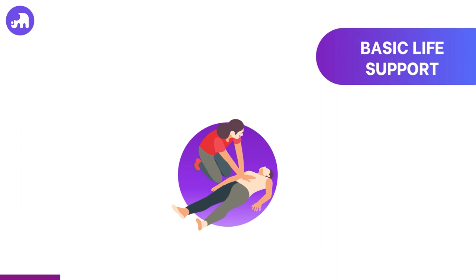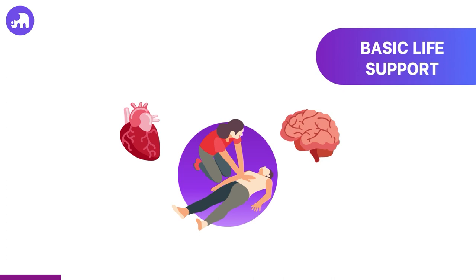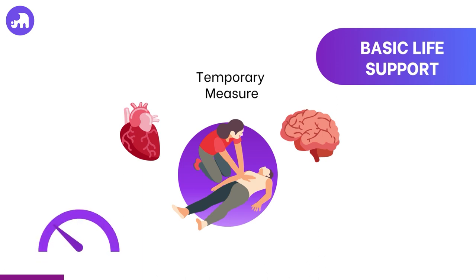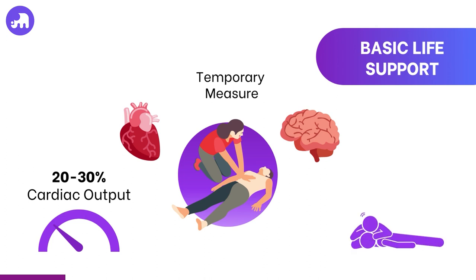The objective of BLS is to sustain myocardial and cerebral oxygenation until defibrillation or specialised personnel equipped for advanced life support become accessible. Serving to uphold ventilation and circulation, BLS is essentially a temporary intervention. Effective external cardiac compression only offers a cardiac output of around 20 to 30 percent of its pre-arrest level. Additionally, employing expired air in rescue breathing provides ventilation with an inspired oxygen concentration of merely 15 to 18 percent, in contrast to the 21 percent present in ambient room air.